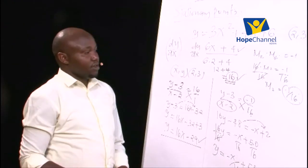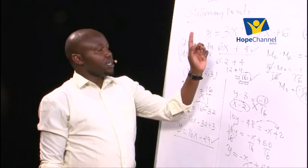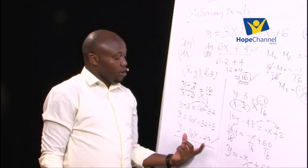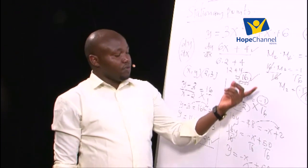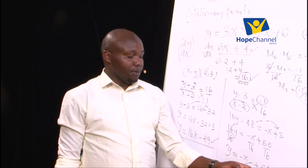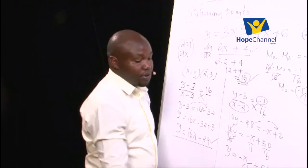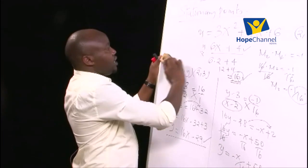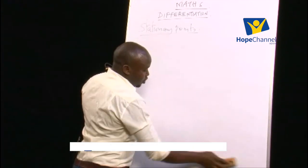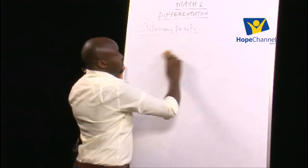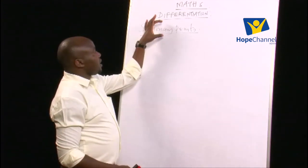You can check your answers on our social media platforms. If you got the gradient function as 6x + 4, give yourself a tick. If you got the tangent as y = 16x − 29, give yourself a tick. If you got the normal as y = −x/16 + 50/16, give yourself a tick. If you got it wrong, now you know the procedure — do more examples to sharpen your skills. Moving forward, under stationary points, we are going to have three types.